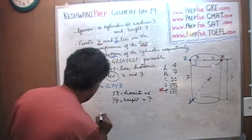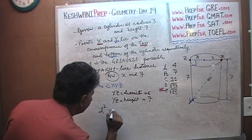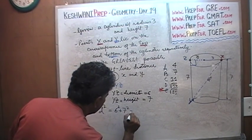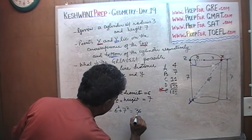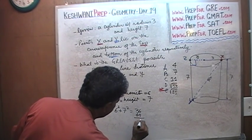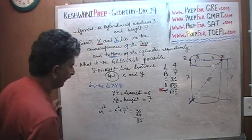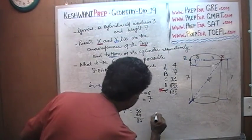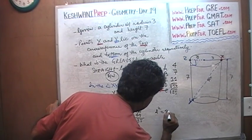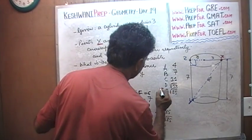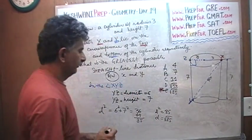The Pythagorean theorem simply tells us, let's call it D for the distance. So your D squared is going to be 6 squared plus 7 squared. 6 squared is 36, 7 squared is 49. Let's add them up: 36 plus 49 equals 85. Therefore, your D squared is 85, and therefore your D, the largest possible distance, is root of 85. That's all. You're done.